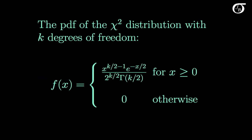Now the probability density function of the chi-square distribution looks something like this. You may not need to know the actual PDF, but let's look at a couple of bits here. There is something called the gamma function in the PDF, but that may not be important depending on how you use this distribution. One important thing to note is that it takes on these values when x is greater than or equal to zero. We can't have negative values with the chi-square distribution, which stands to reason if we're squaring standard normal random variables and adding them up.